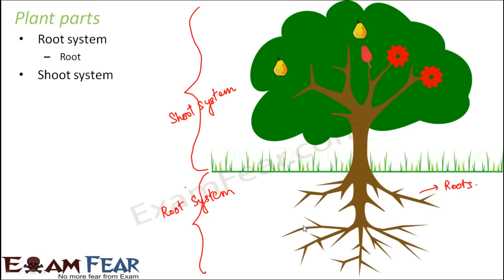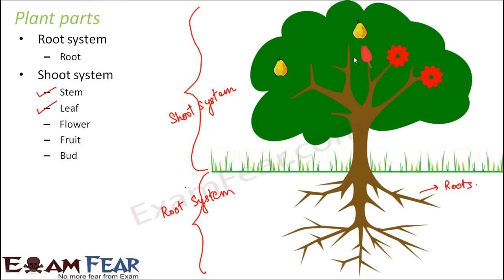The shoot system includes many different parts. The stem is the part because of which the plant keeps growing upward and holds all other parts. Then you have leaves, flowers, fruits, and buds. The bud is the structure that gives rise to the flower — as it matures, it becomes a flower.